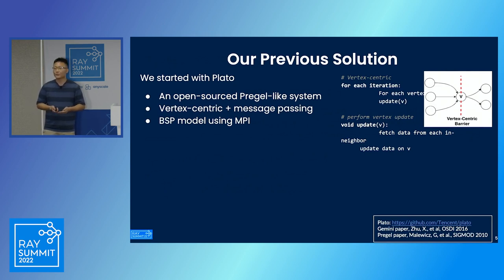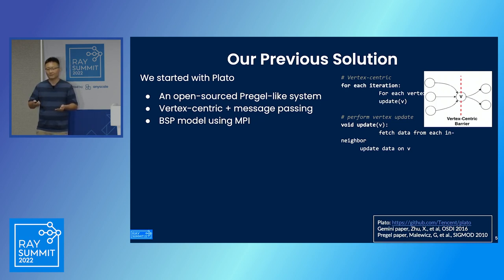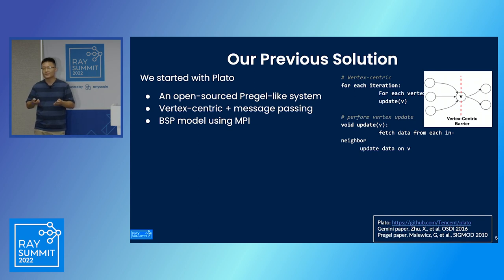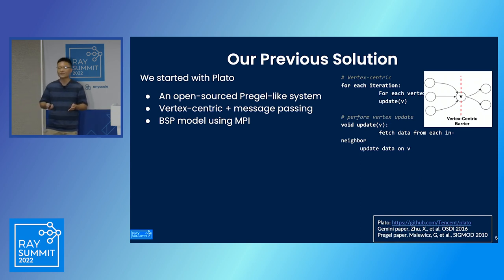We started with Plato, which is an open-sourced Pregel-like system built with a vertex-centric methodology. For every iteration, you update every vertex by fetching the in-neighbor data. Every iteration has a clear vertex-centric barrier, which means computation happens for every vertex. Before it's done, you cannot move on to the next iteration. It's clearly a BSP model using MPI for data passing.